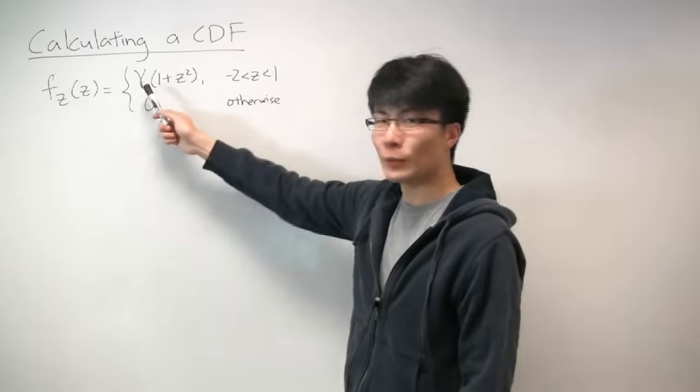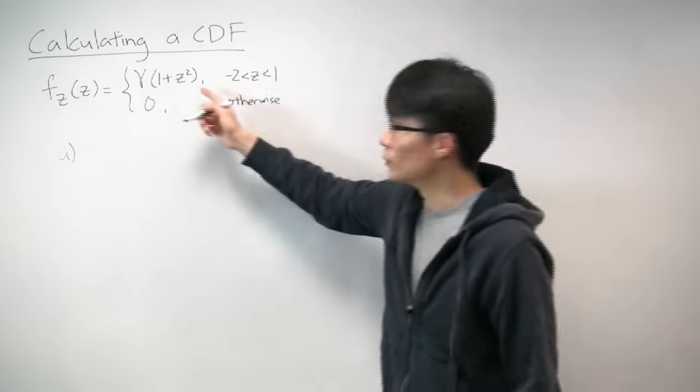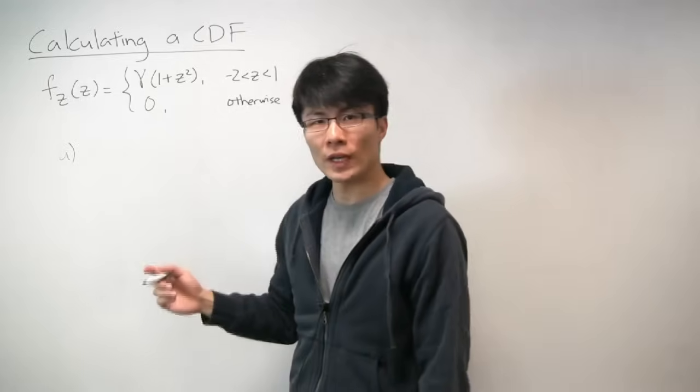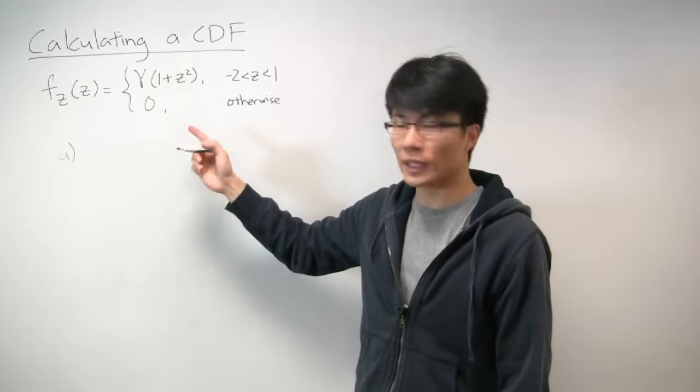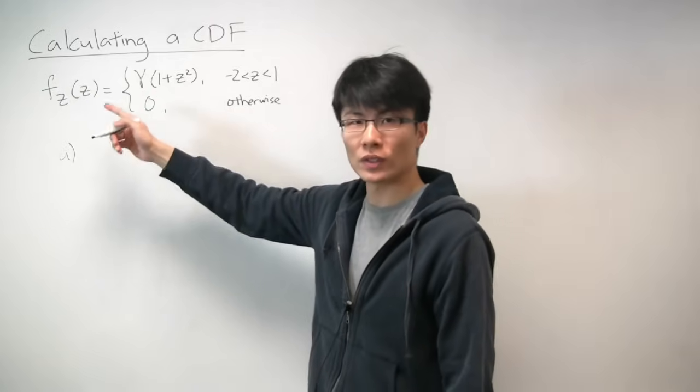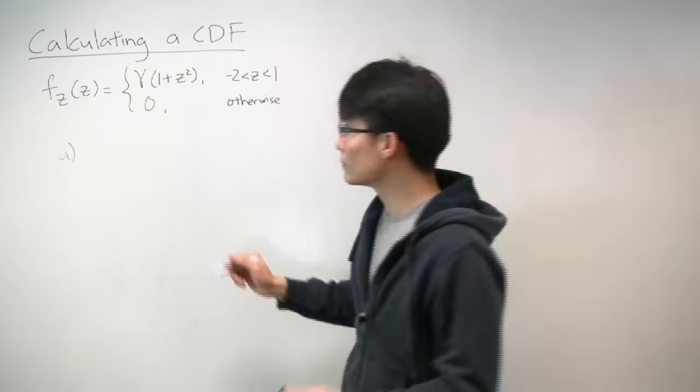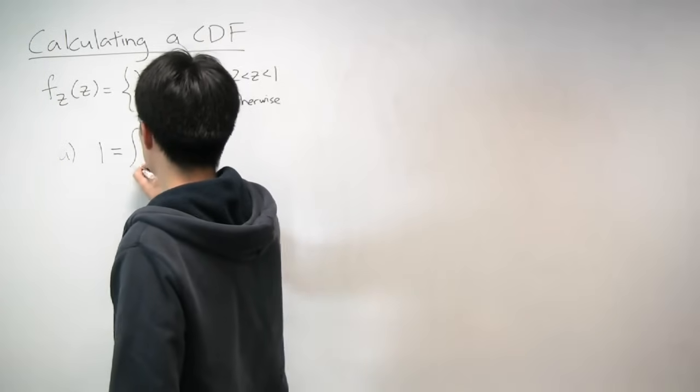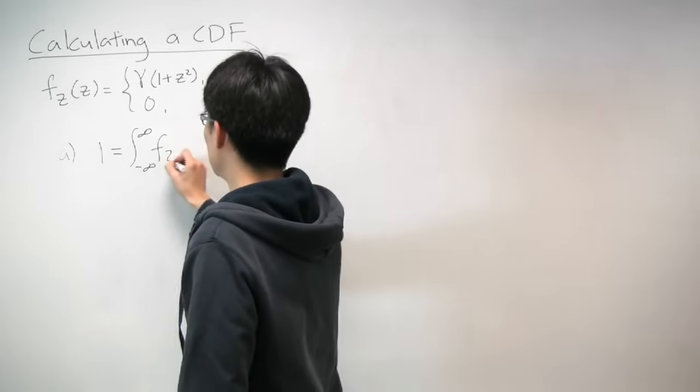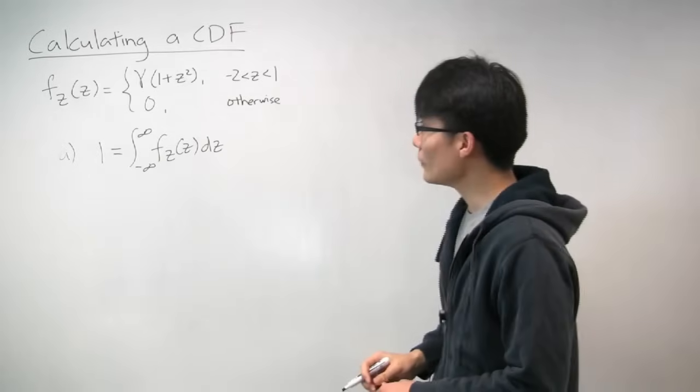All right, so the first thing we need to do, and the first part of this problem is we need to figure out what gamma is, because it's not really a fully specified PDF yet. We need to figure out exactly what the value of gamma is. And how do we do that? Well, we've done analogous things before for the discrete case. So the tool that we use is that the PDF must integrate to 1. So in the discrete case, the analogy was that the PMF had to sum to 1. So what do we know? We know that when you integrate this PDF from negative infinity to infinity, f_z of z, it has to equal 1.